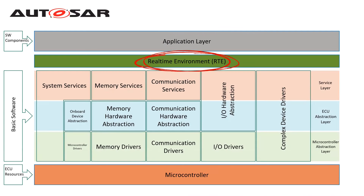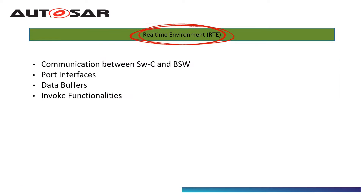The next layer is RTE — it is a middleware layer between the Application Layer and the Basic Software Layer. It provides a communication channel between software components and BSW using ports and port interfaces. These ports exchange data using RTE buffers and invoke BSW functionalities. An interesting fact about RTE is that the software architecture above RTE changes from a layered to a component style.